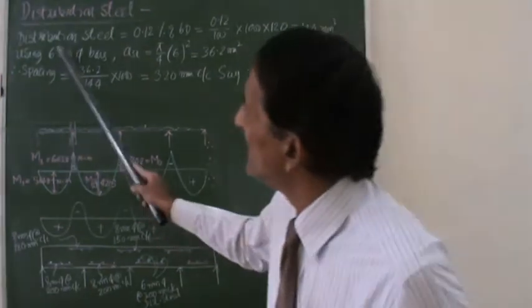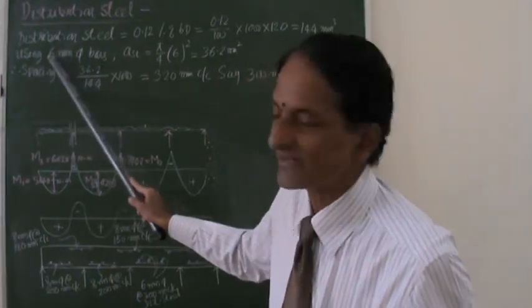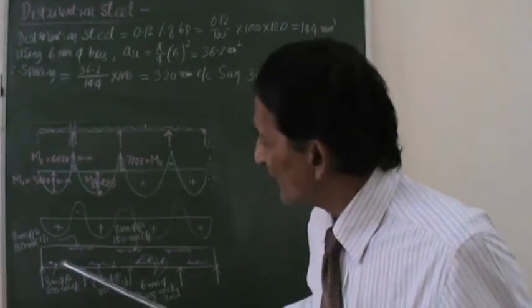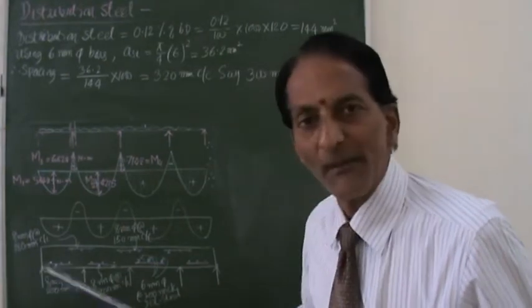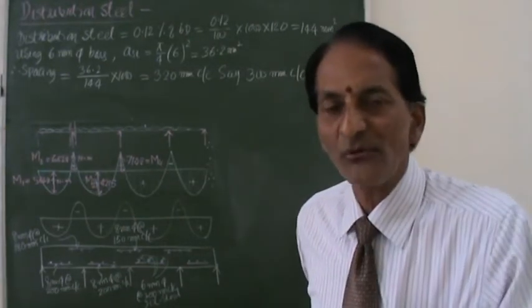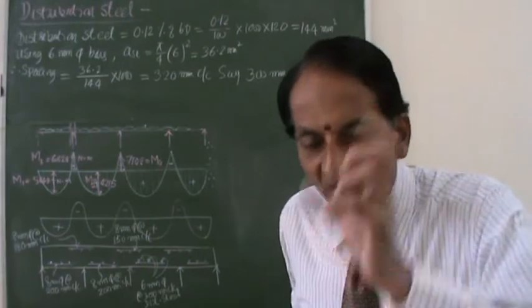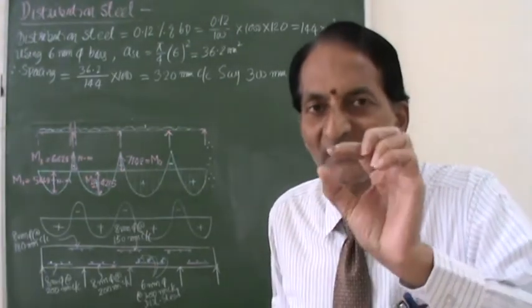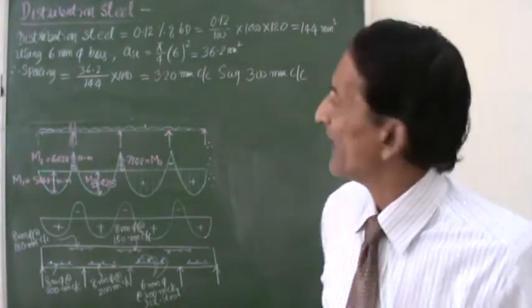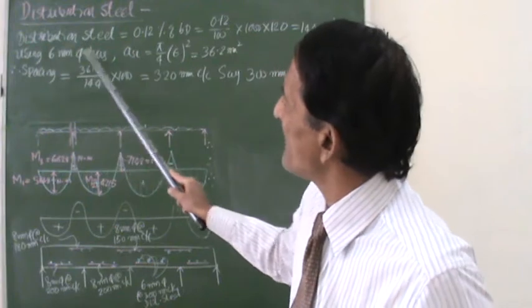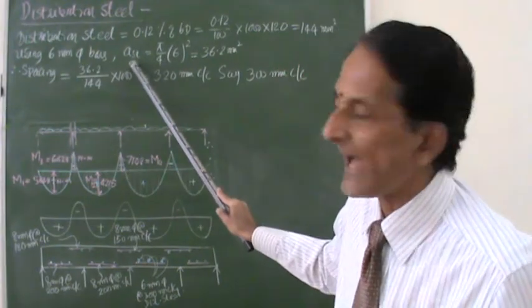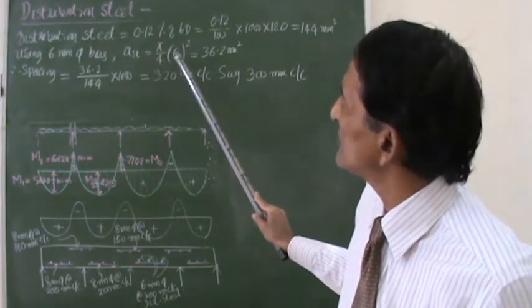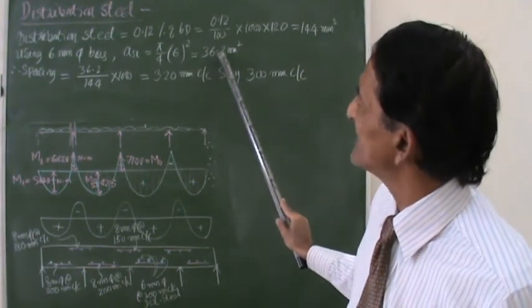I take a decision to use 6mm bars. Earlier for the main bars, we have used 8mm. Now for the distribution bars, you can go for slightly less diameter bar. So I will use 6mm bars. Small ASP I have calculated, it is pi by 4 times 6 square. It will give me 28.3 mm square.